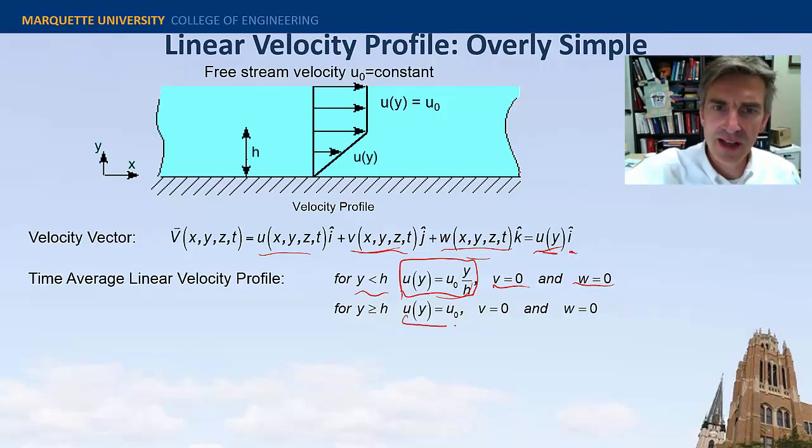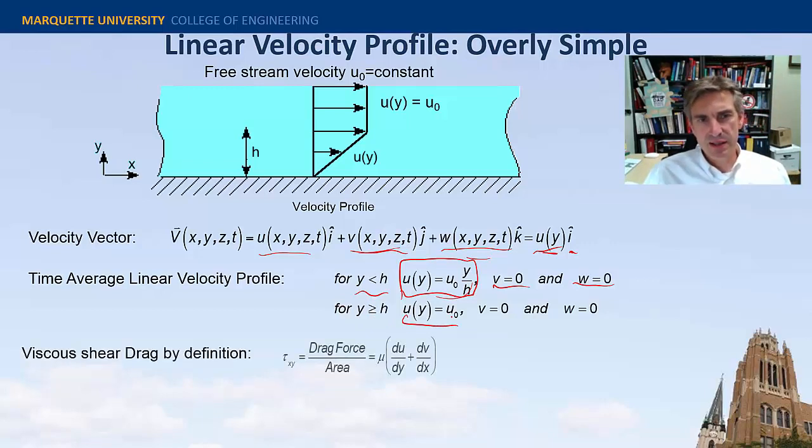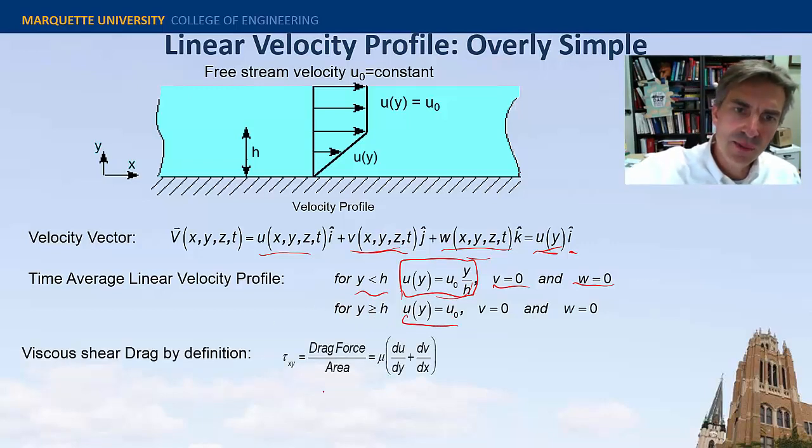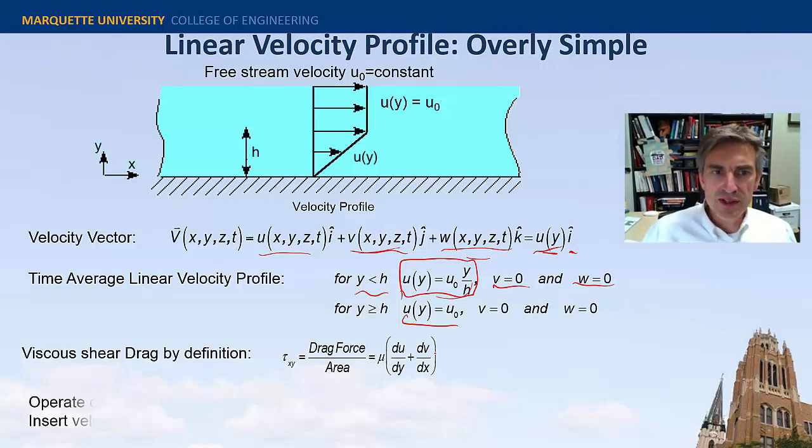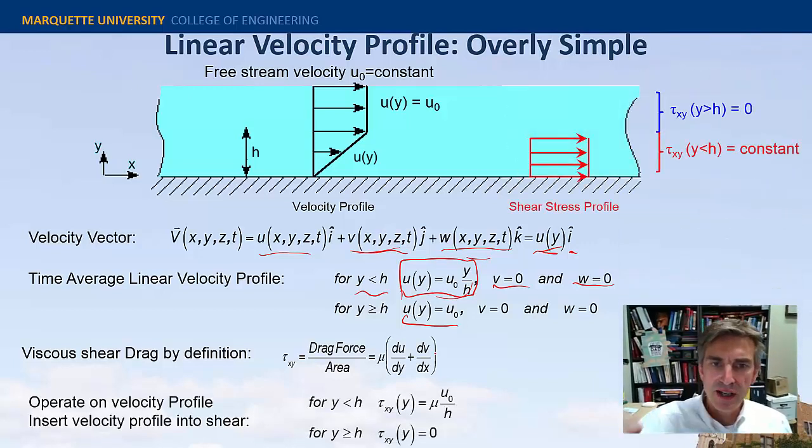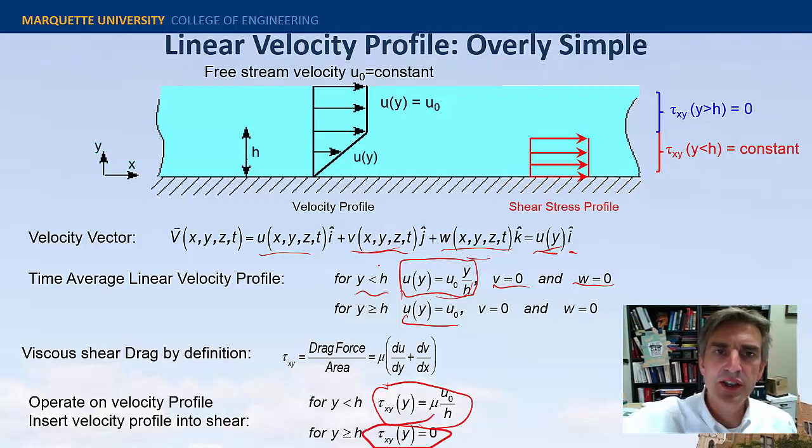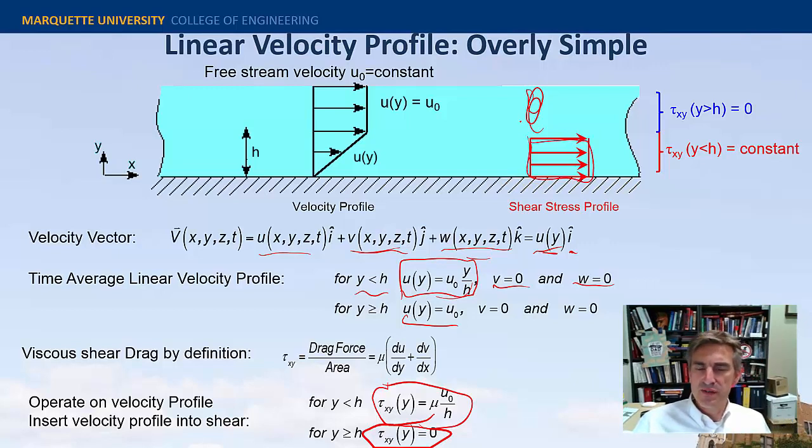If I take that velocity profile and insert it into our simple incompressible viscous shear stress definition, then upon operating on it I'll get a constant shear stress in this linear region and then zero shear stress above the linear region. That makes a lot of sense - there's no shear stress in the inviscid core and there's constant shear stress in the viscid core. Now I can use this very simplified profile to solve basic problems.